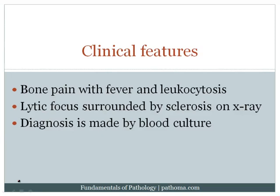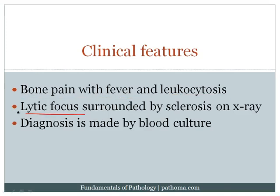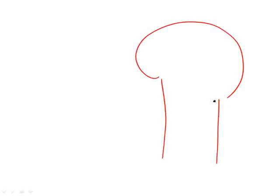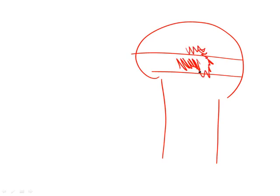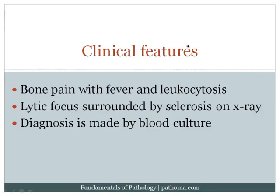Clinical features of osteomyelitis include bone pain with fever and leukocytosis. The infection results in a lytic focus representing liquefactive necrosis surrounded by sclerosis on x-ray. In a child, this would typically be in the metaphysis — an area of necrosis surrounded by reactive bone creating sclerosis. This is an important x-ray finding, and the diagnosis can be confirmed by blood culture.